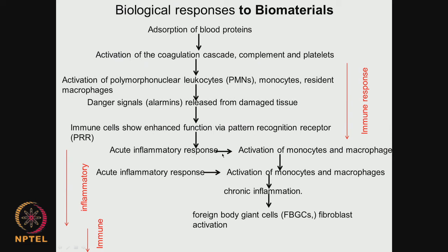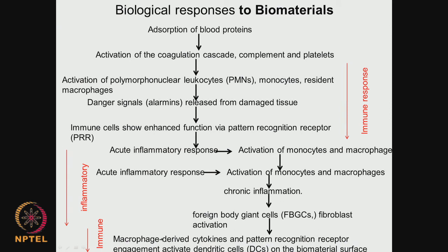You are going to have an acute inflammatory response, with activation of monocytes and macrophages. Then chronic inflammation happens after the acute phase. Then you get foreign body giant cells and fibroblast activation. Finally, macrophage-derived cytokines and pattern recognition receptor engagement activate dendritic cells, and all these start accumulating on the biomaterial. The immune response takes place again.